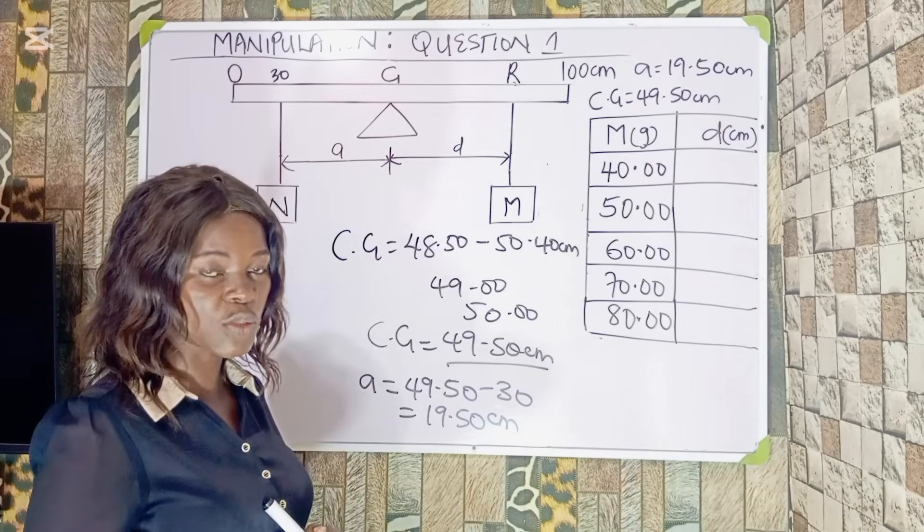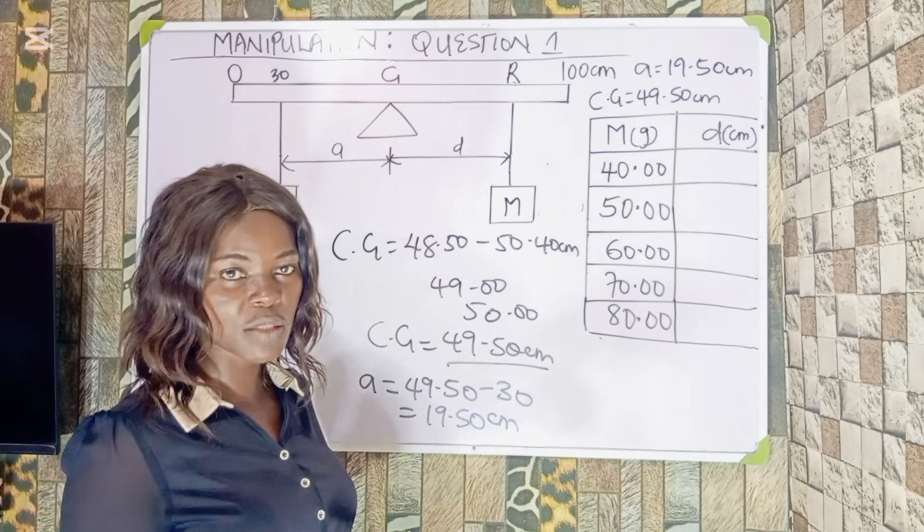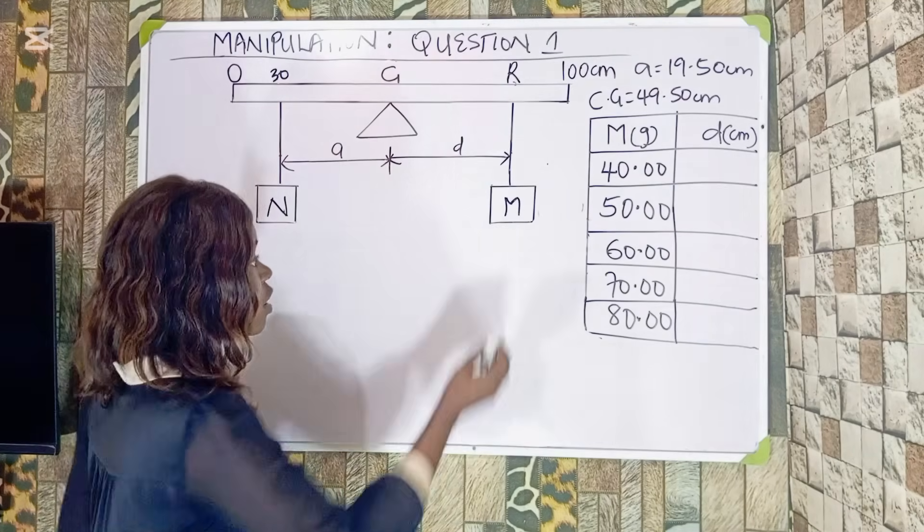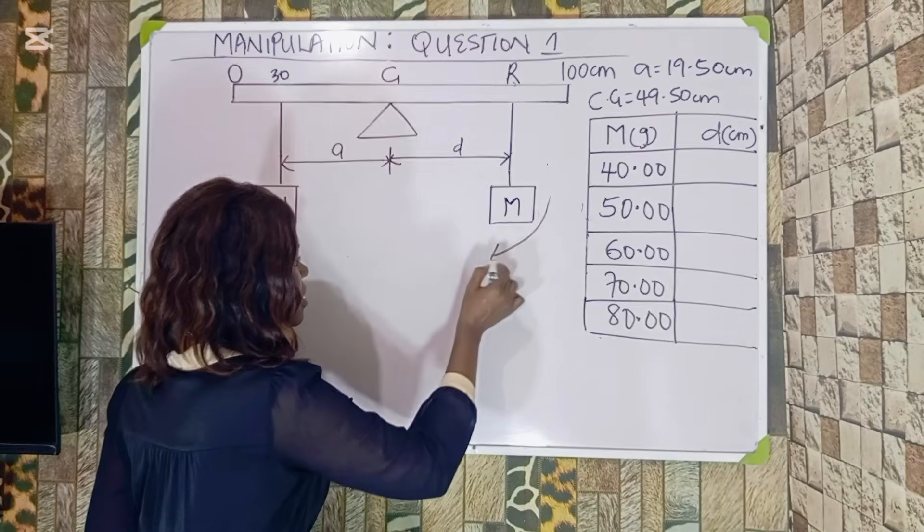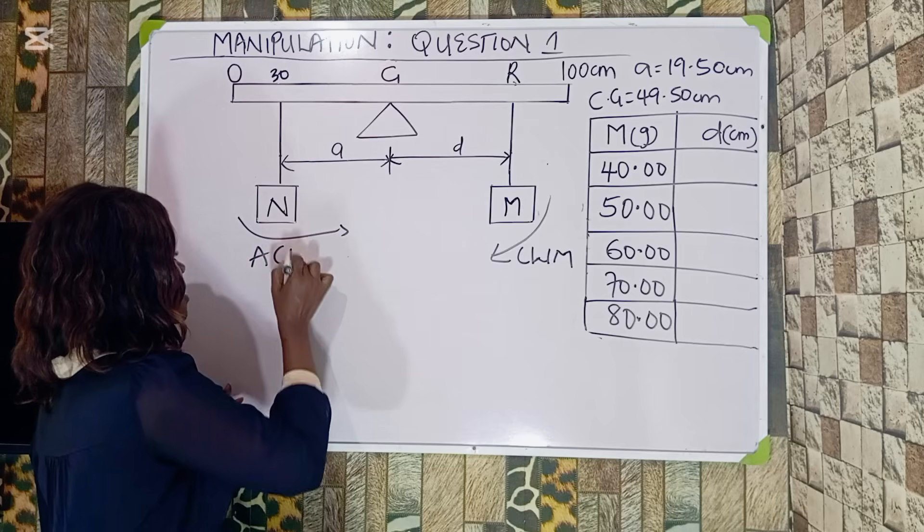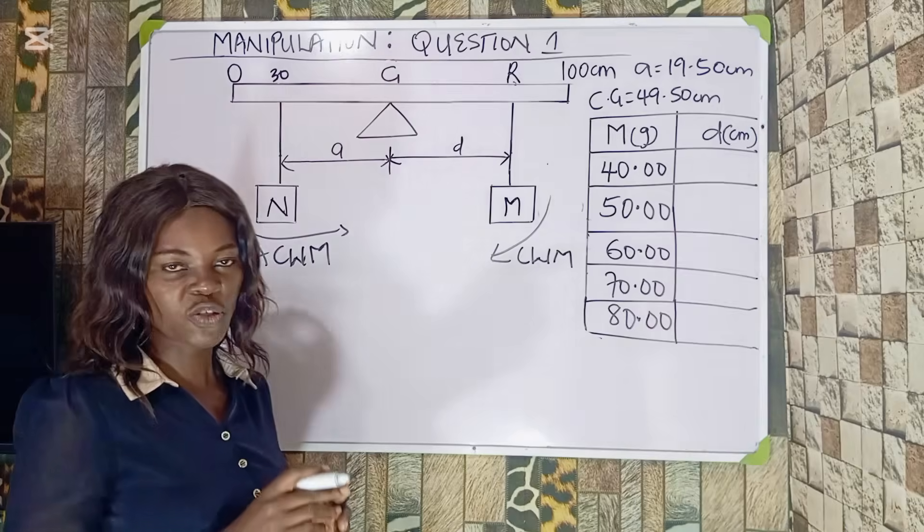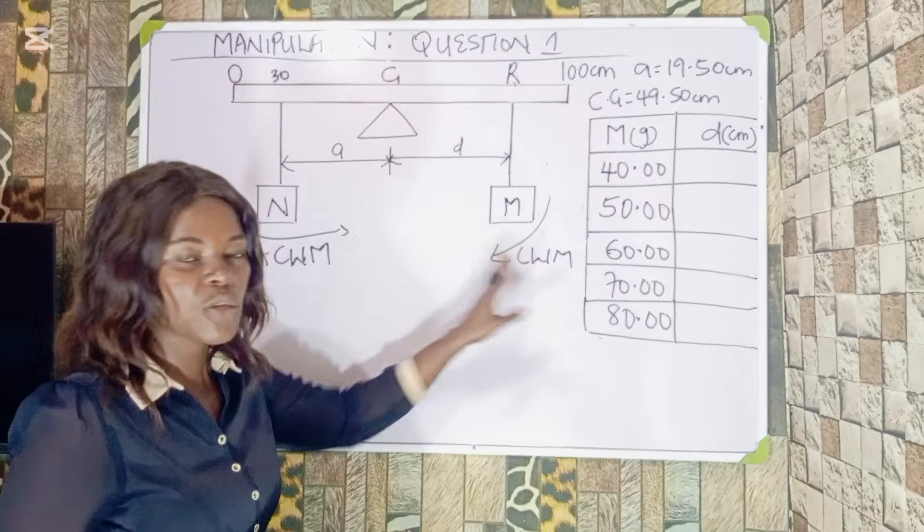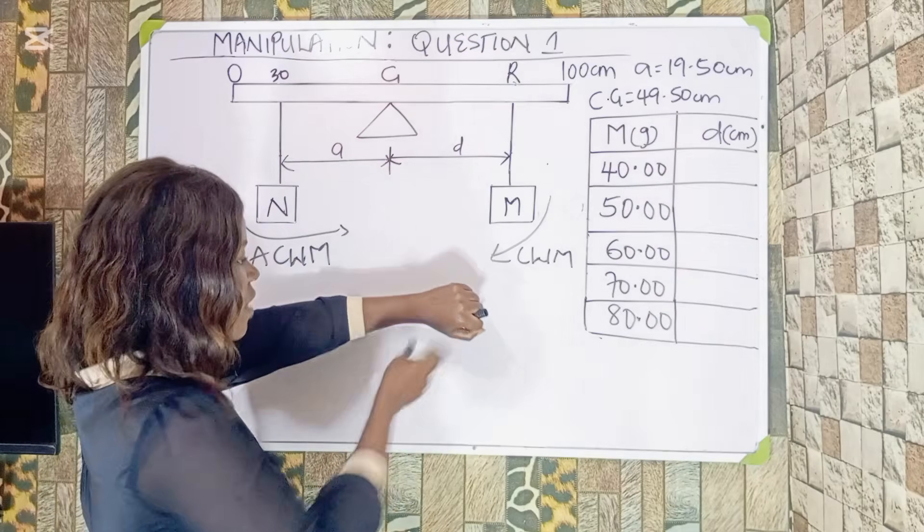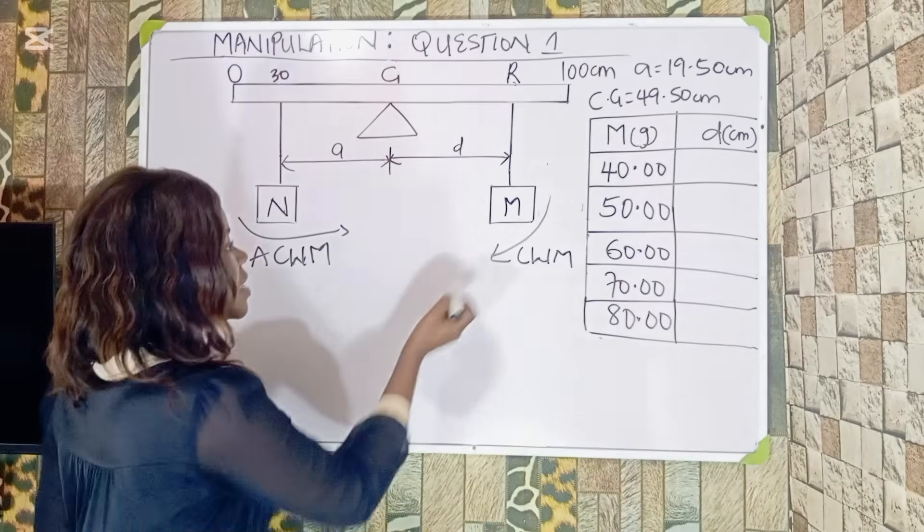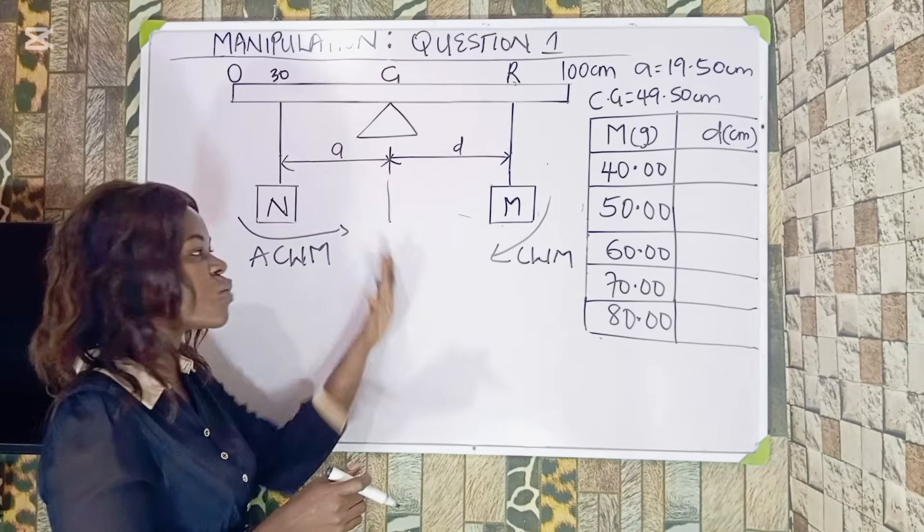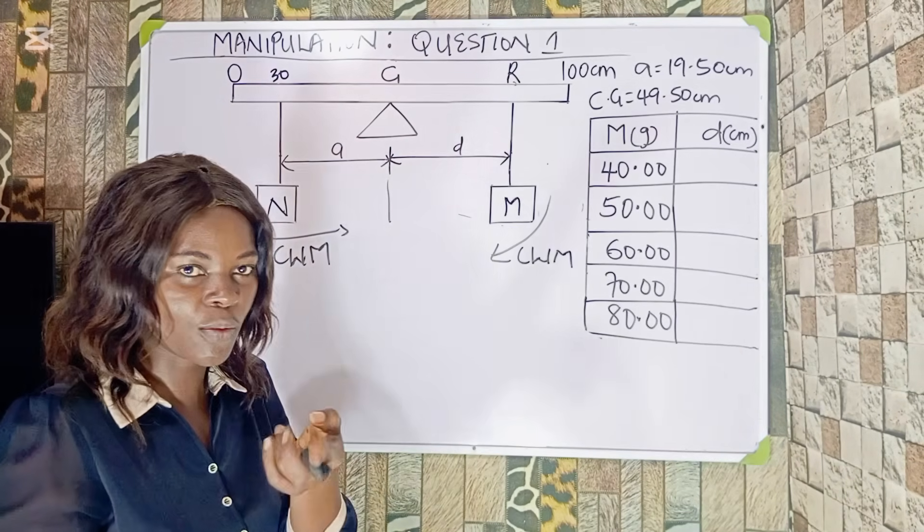From the principle of moments, which says clockwise moment equals anticlockwise moment, we can use it to get the distance d. The clockwise moment is this, while this is anticlockwise moment. They are equal to each other. Clockwise moment equals anticlockwise moment. The clockwise moment is when you keep your hand this way, like your clock goes. The distance is from here to here, that is the d. Once it crosses here, it is no longer clockwise, it becomes anticlockwise.